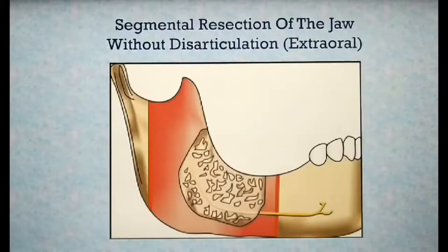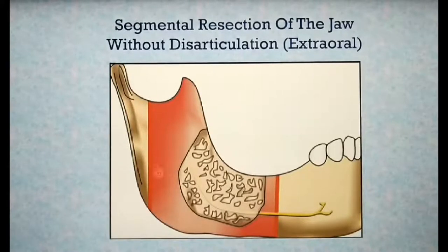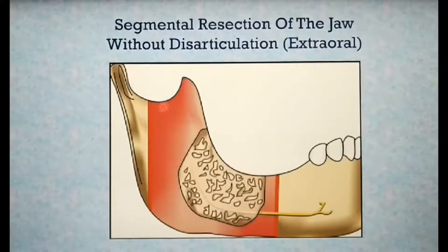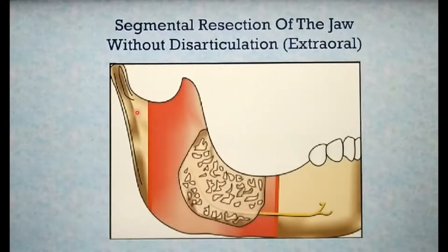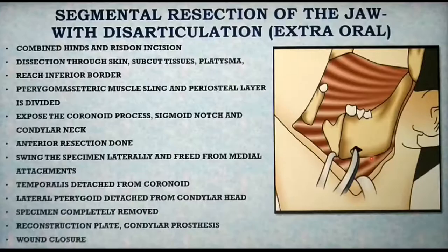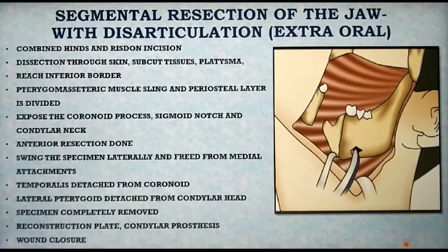The extraoral approach for segmental resection can be performed with or without disarticulation. Disarticulation means removing the condylar segment along with the specimen. In some cases, surgeons do not remove the condyle if it is not involved in the disease — the condylar stump alone is left within the fossa and the rest of the mandible is resected. Surgeons prefer to retain the condyle because of the difficulty in reconstructing the condylar head or the temporomandibular joint. This diagram depicts segmental resection without disarticulation, where the condylar stump or condylar segment is intact.